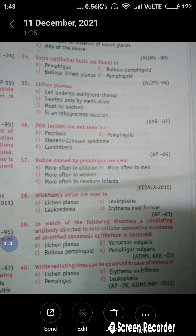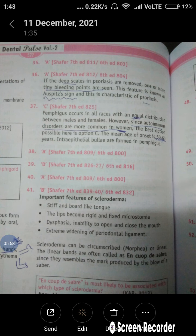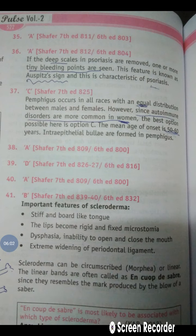Question number 37: Bullae caused by Pemphigus are more often seen in which group? The answer is option C — more often in women. Looking at the explanation: Pemphigus occurs in all races with equal distribution between males and females; however, since autoimmune disorders are more common in women, the best possible answer is women. The mean age of onset is 50 to 60 years, and intraepithelial bullae are found in Pemphigus. So key Pemphigus facts: intraepithelial bullae, FNAC is used, more common in women, mean age around 60 years.